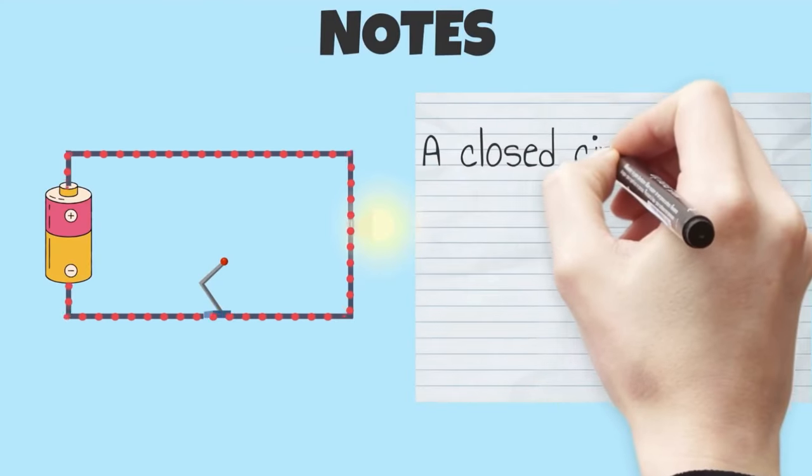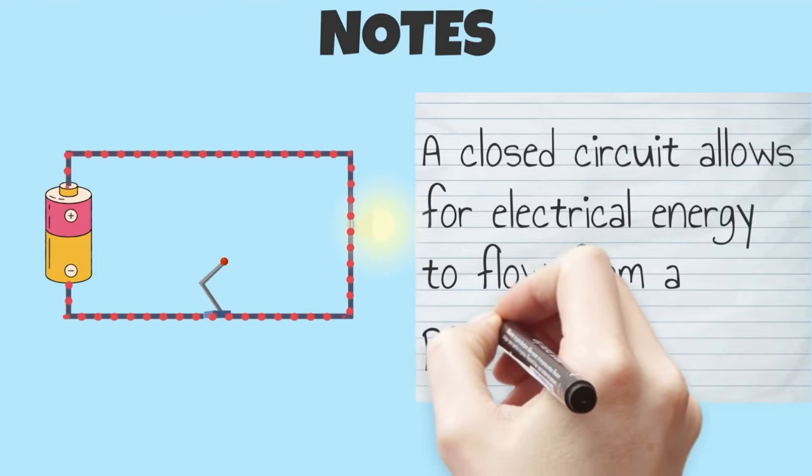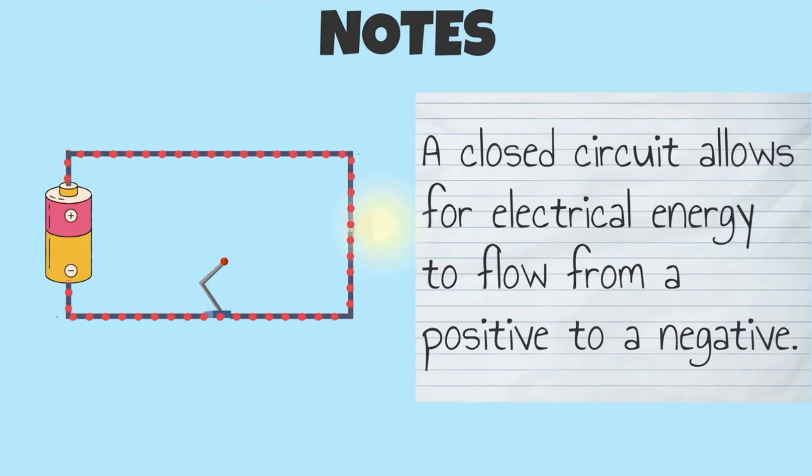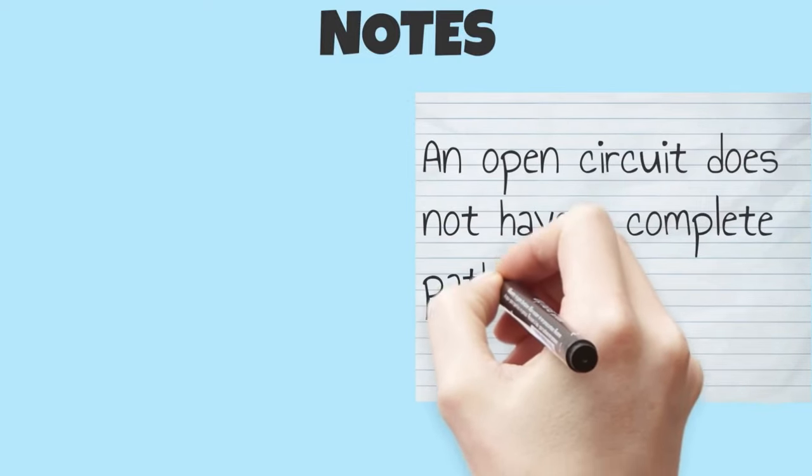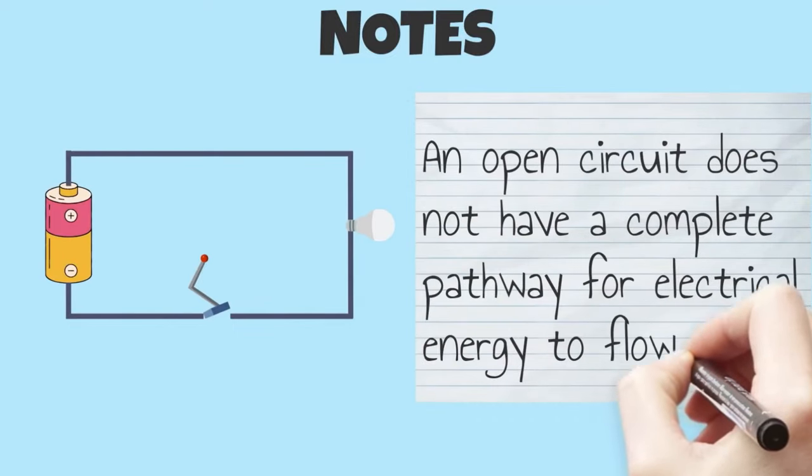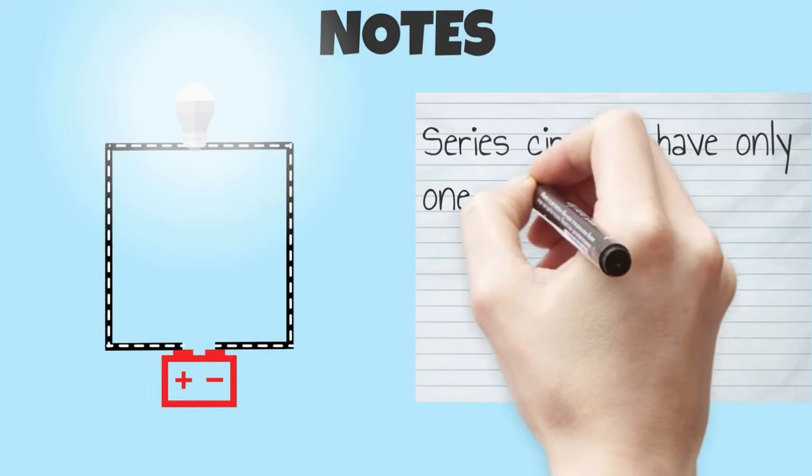Let's review what we just learned. A closed circuit allows for electrical energy to flow from a positive to a negative. An open circuit does not have a complete pathway for electrical energy to flow.